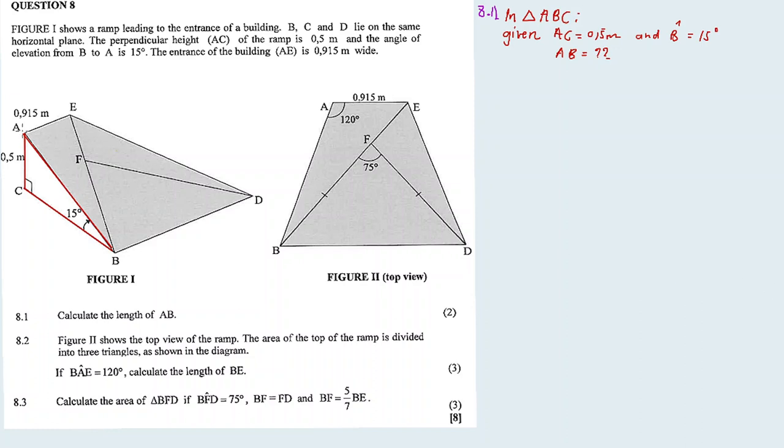AC is the opposite side, and we're given angle B. We need to calculate AB, the hypotenuse. Which ratio includes the hypotenuse and the opposite side? Yes, it's sine. Sine angle B, sine 15 degrees equals opposite over hypotenuse. AC is the opposite and AB is the hypotenuse. So sine 15 degrees equals 0.5 divided by AB. Cross multiply: AB times sine 15 degrees equals 0.5. Therefore, AB equals 0.5 divided by sine 15 degrees.